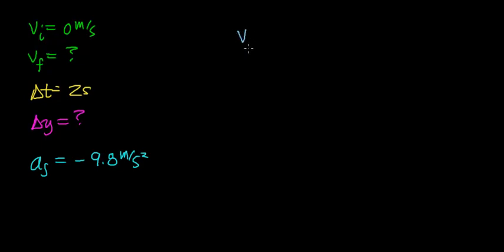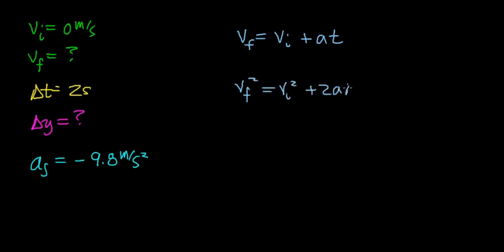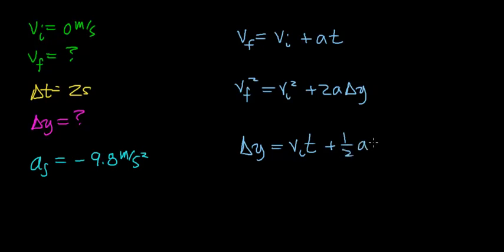Let's take a look at the kinematic equations. One equation says the final velocity equals the initial velocity plus the acceleration times time. Another says the final velocity squared equals the initial velocity squared plus two times the acceleration times delta y, because it's falling in the downward direction. And another equation says the height of the cliff equals the initial velocity times time plus one half of the acceleration times the square of the time.